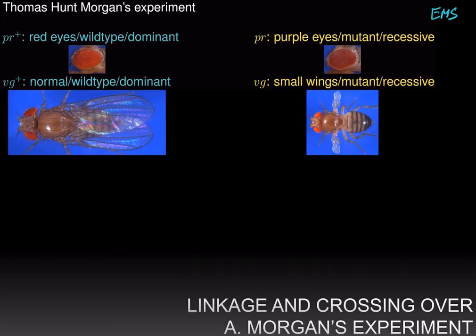Now a word about notation. Sometimes, although it's not always the case, you denote wild type alleles with the plus symbol. The plus symbol doesn't mean that it's dominant or recessive. It doesn't tell you anything about the phenotype except that this allele or phenotype tends to occur in the wild — it is the wild type phenotype.